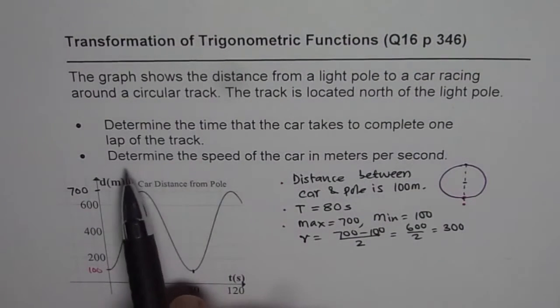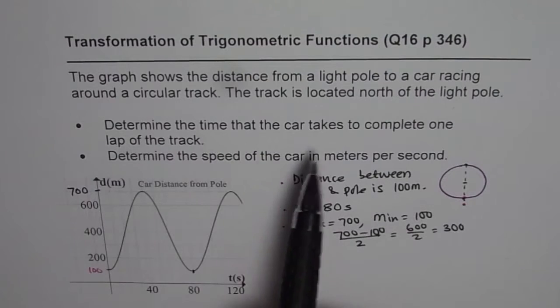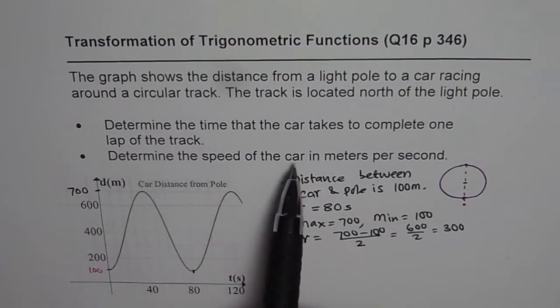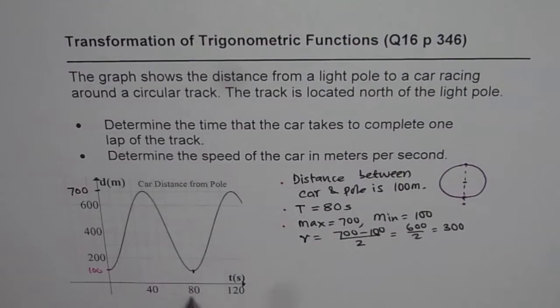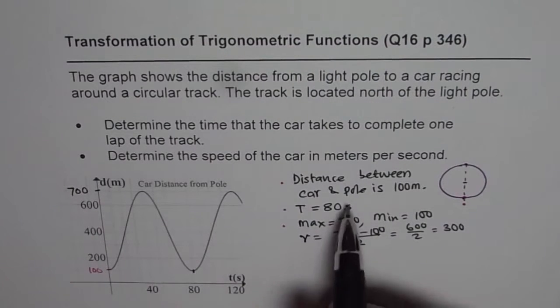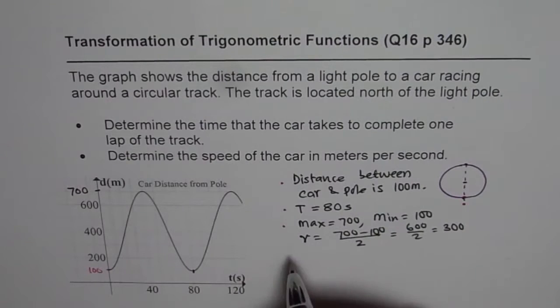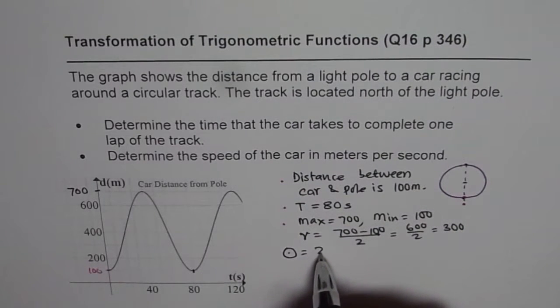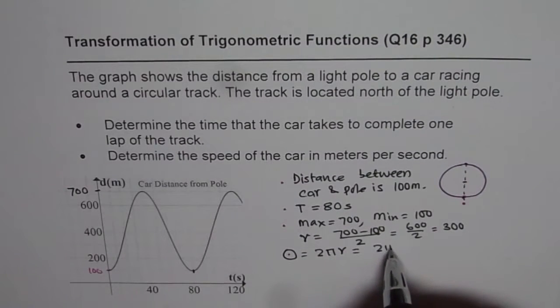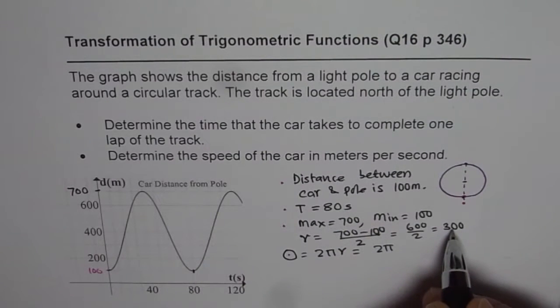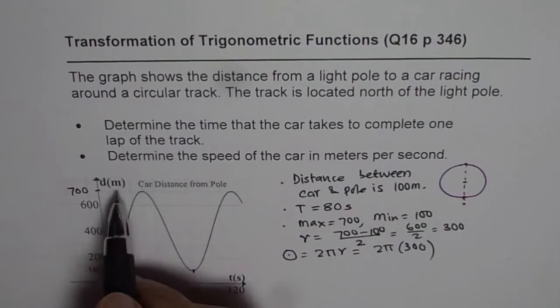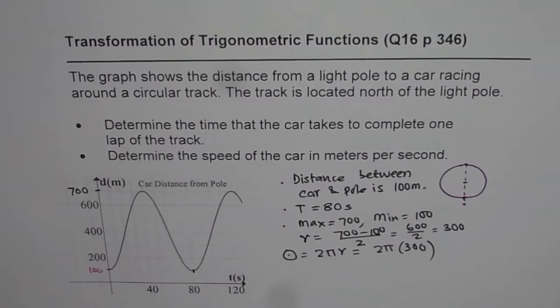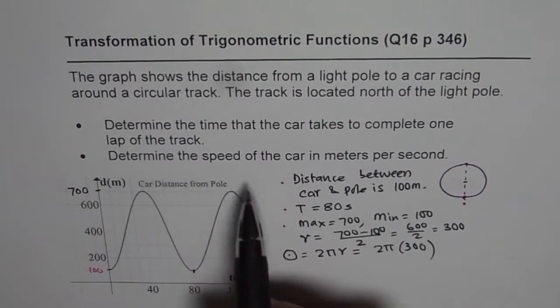The second part of the question is determine the speed of the car in meters per second. So one revolution takes place in 80 seconds. Now, the distance covered is 2 pi r. So the circumference is 2 times pi times radius, which is 2 times pi times radius in this case is 300. So we will write 300 here. The units are meters for us. So that is the distance.